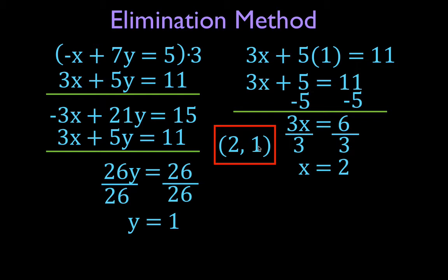That means that this is the point on the x, y coordinate system where these two lines cross. This point lies on this line and this point lies on this line. That means that this point is a solution to this line and this point is also a solution to this line.